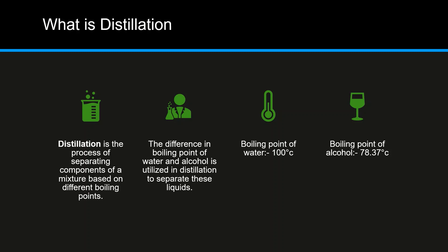The difference in the boiling points of water and alcohol is utilized to separate these liquids. We will talk about how it is done when we discuss the pot still and patent still, which are the types of distillations.